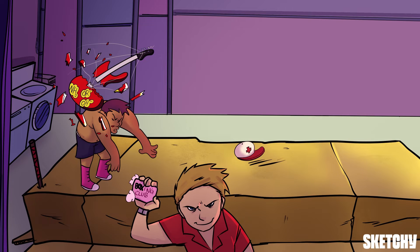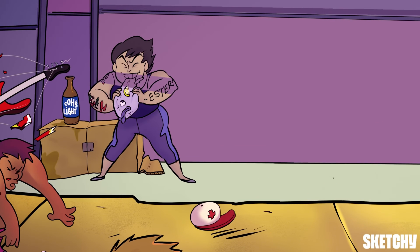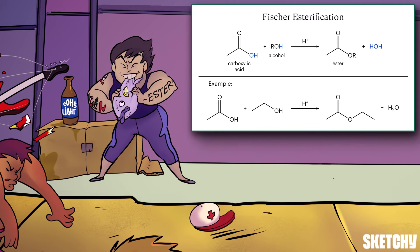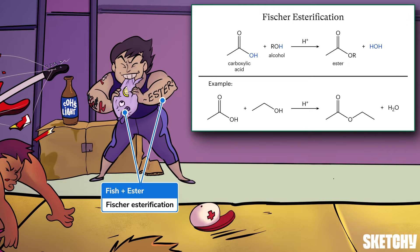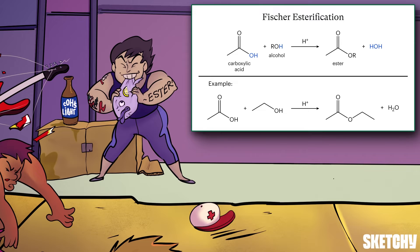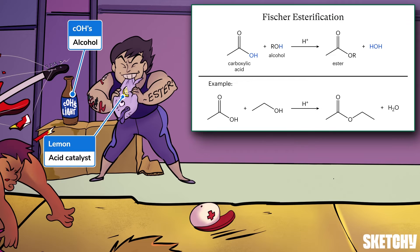Aside from being deprotonated, carboxylic acids are commonly converted into a handful of other molecules. We're going to take a closer look at those reactions by checking out the contenders waiting to face off in the ring. The first reaction we'll look at turns carboxylic acids into esters — this reaction is called the Fischer Esterification. The Fischer Esterification requires the original carboxylic acid plus an alcohol, like this cold bottle of beer, and an acid catalyst, represented by this acidic lemon garnish.